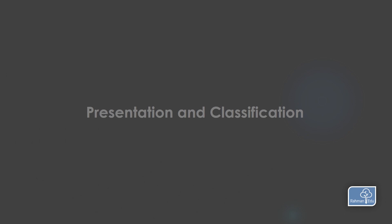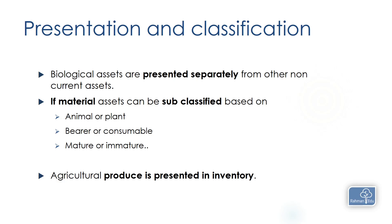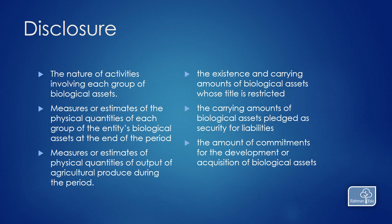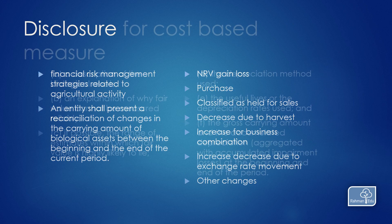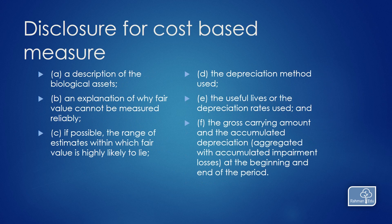For presentation and classification, biological assets are presented separately from other assets. If material, they are sub-classified as animals, plants, bearer, consumable, mature, immature, etc. Agricultural produce is shown in inventory. I hope this video was helpful and you've learned something new. Consider sharing it with friends, and if you have any questions or want a specific video, please let me know in the comments below.